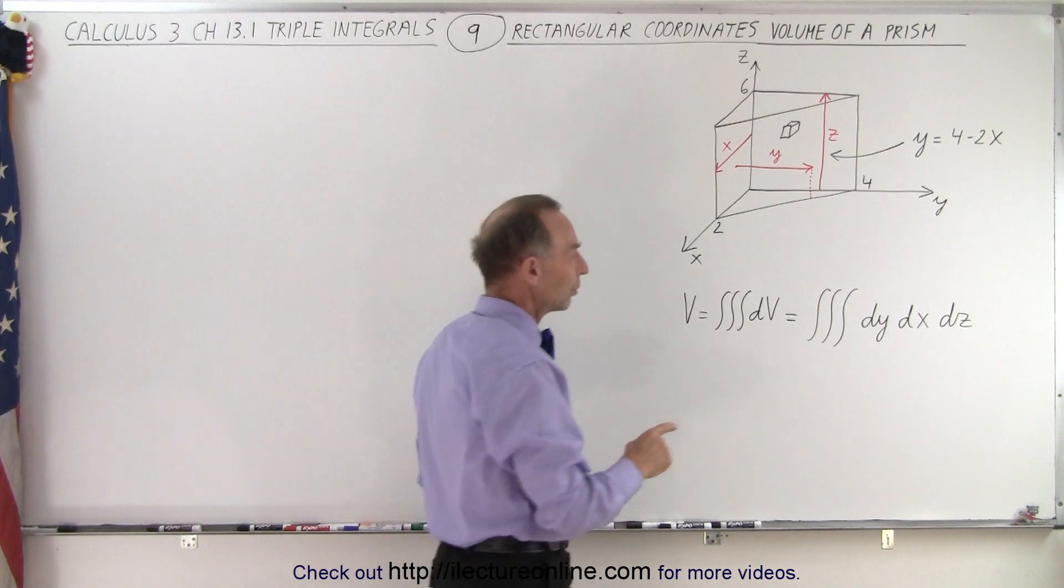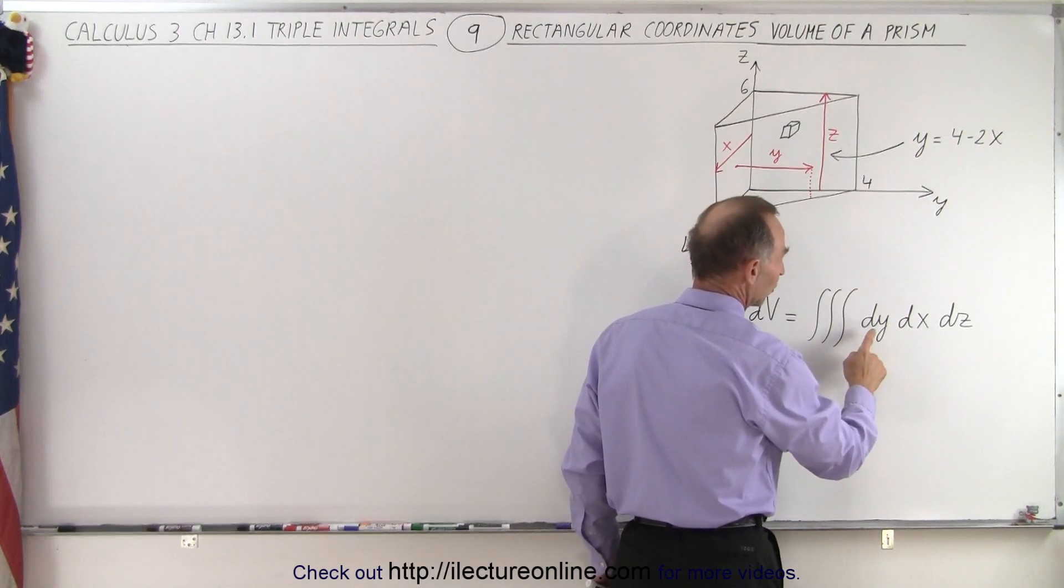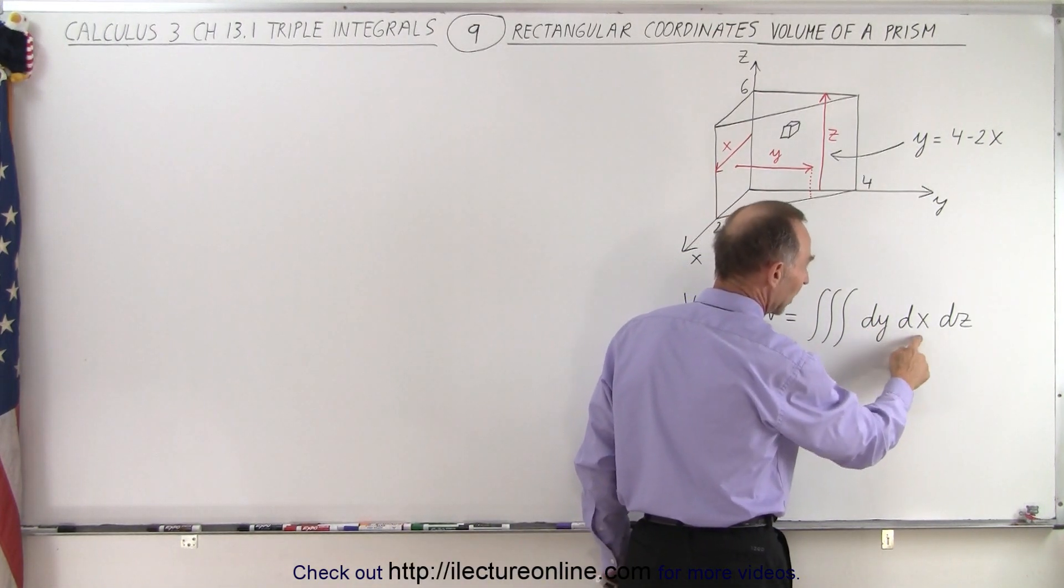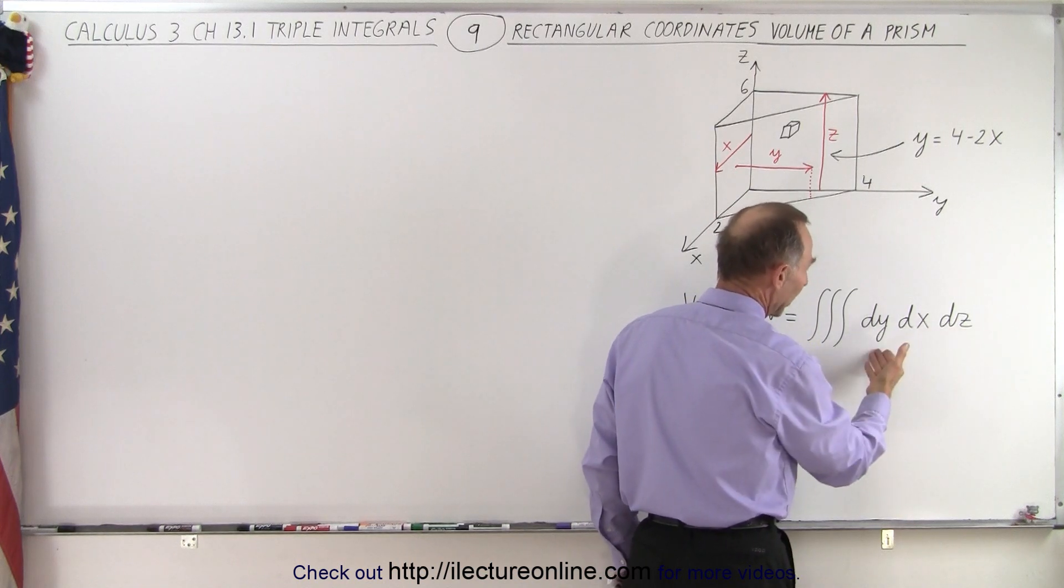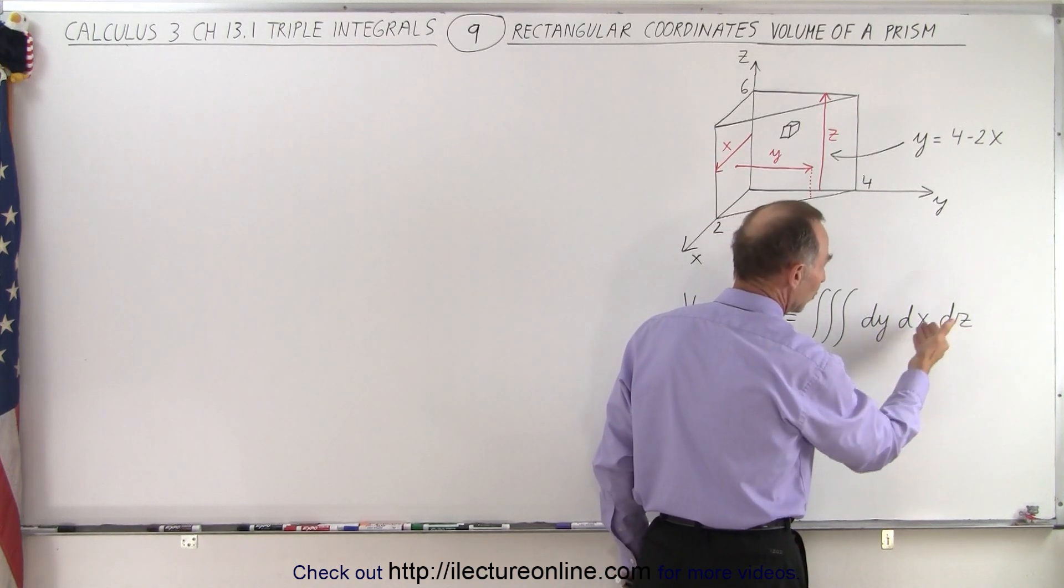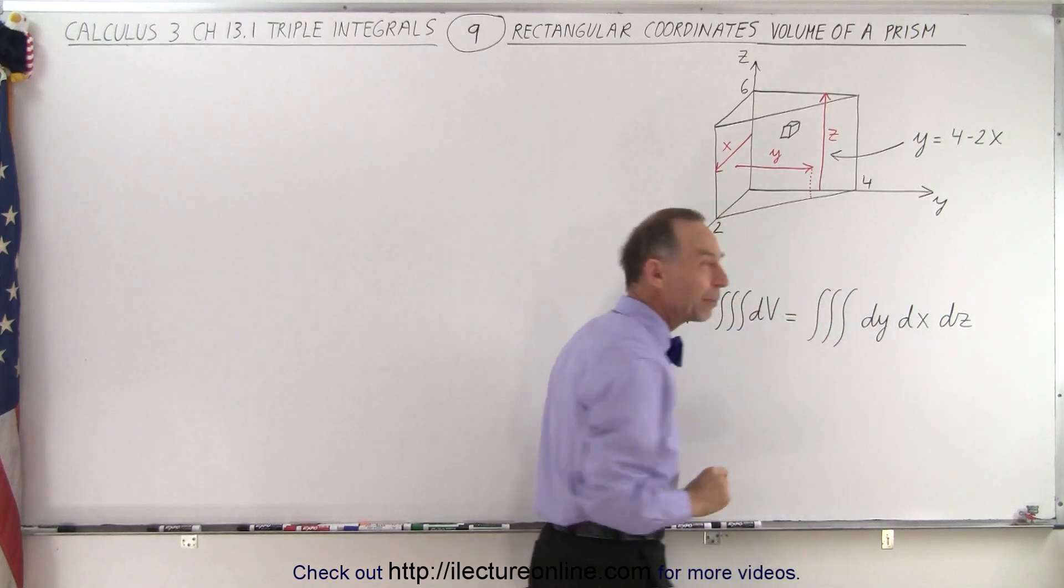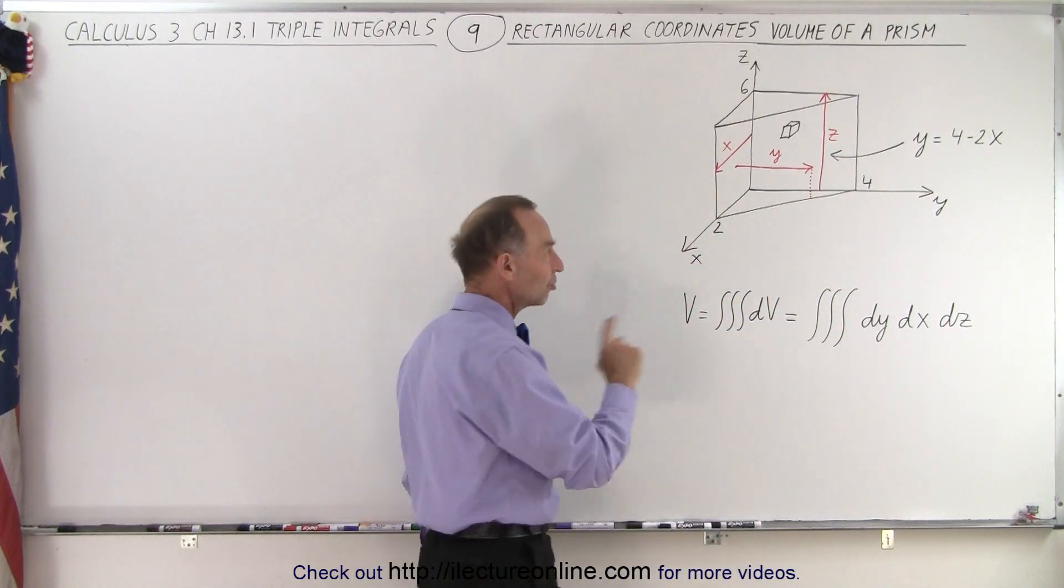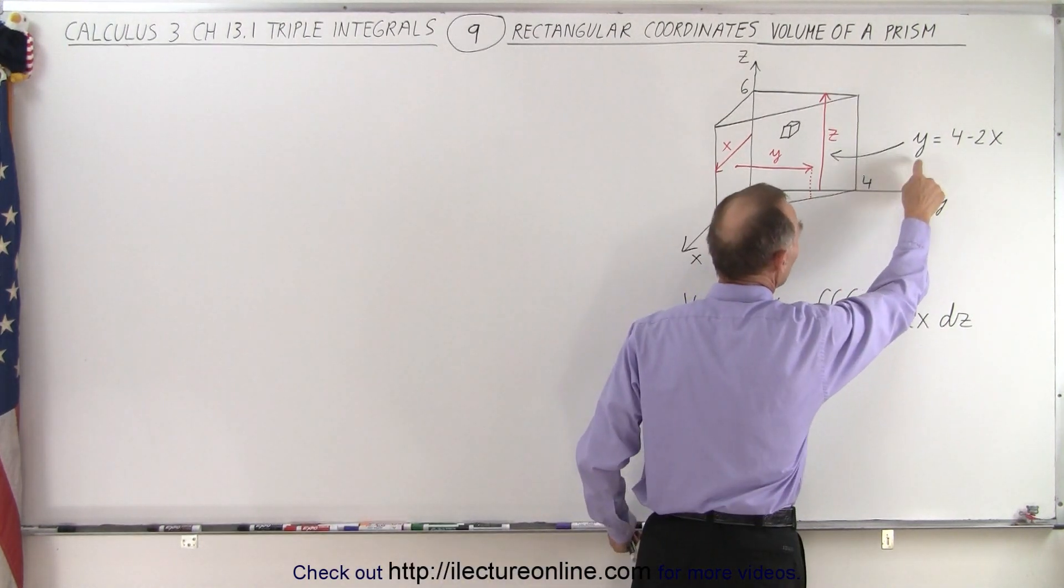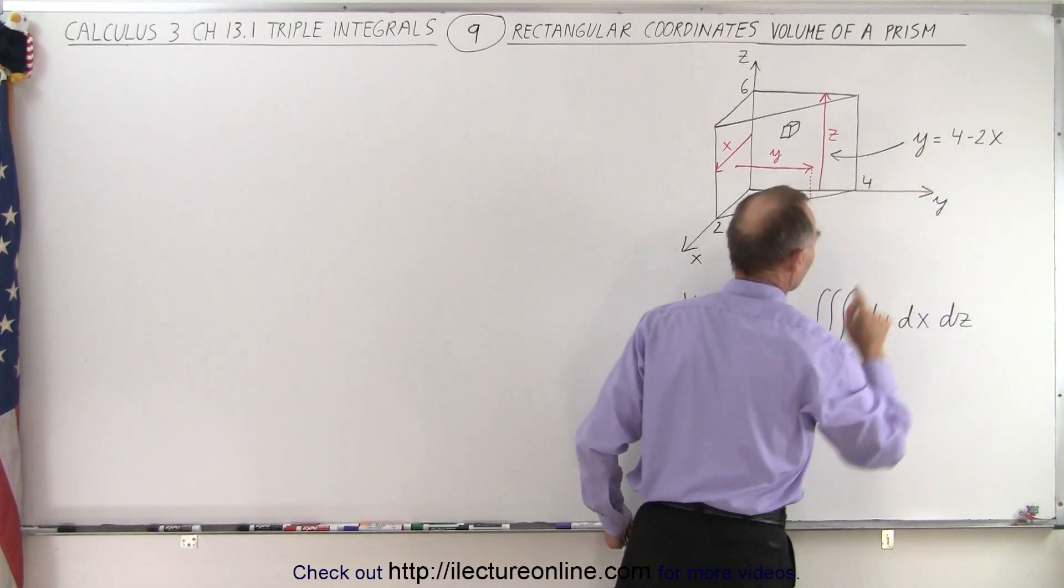Notice that the order of integration is going to be a little bit different. We're going to start with y first, then x, then z. After the y, it doesn't matter if we do x first and z, or z first and x. But there's a reason why we do y first, because there's a functional relationship between y and x.